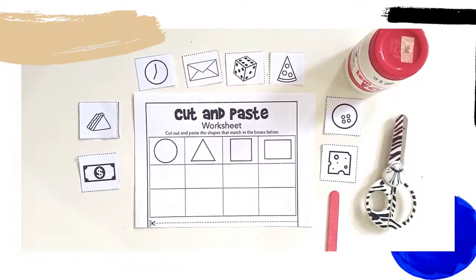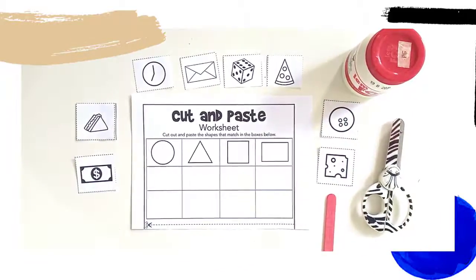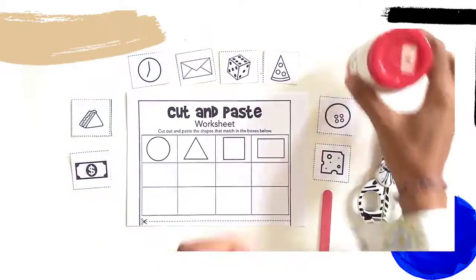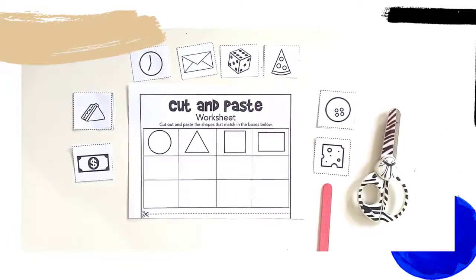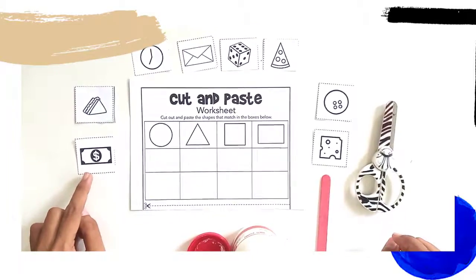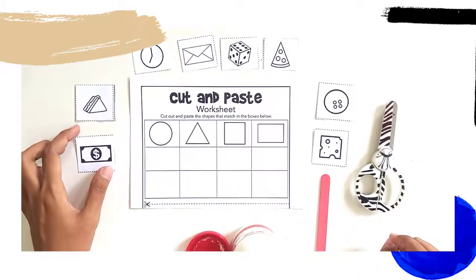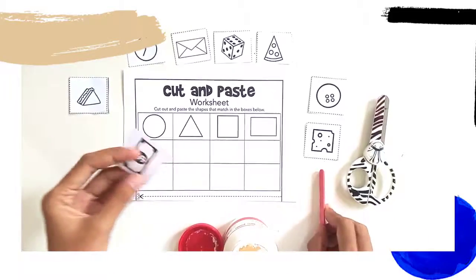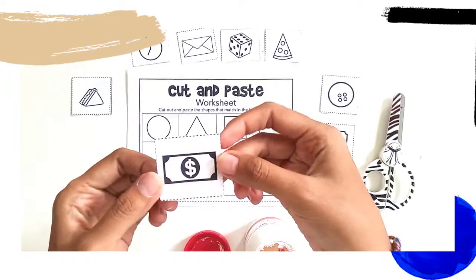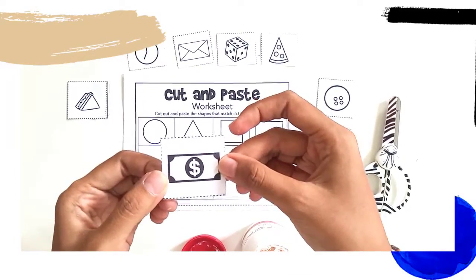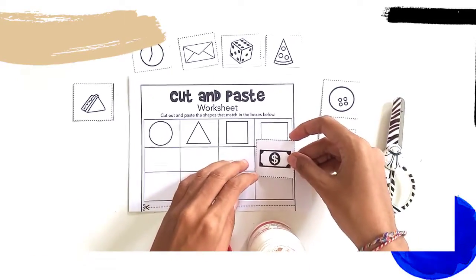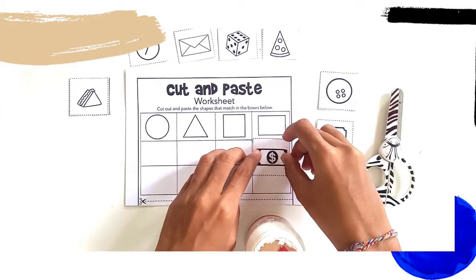Okay, I already cut all of the pictures. And now, let's stick it together. I open the glue. Let's see this picture. What picture is this? Yeah, that's money. Okay, can you guess what shape is this money? Yeah, it's rectangle.